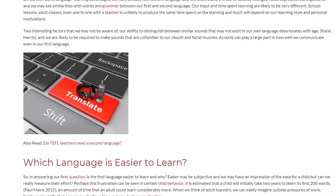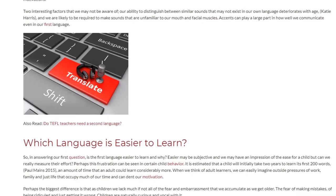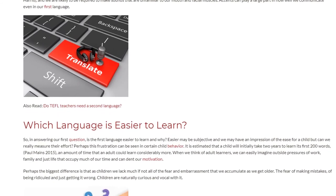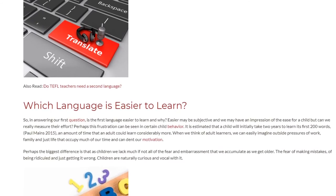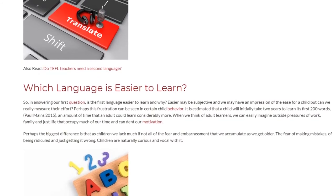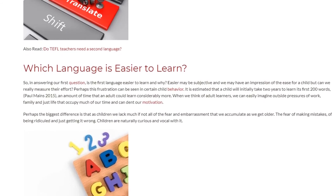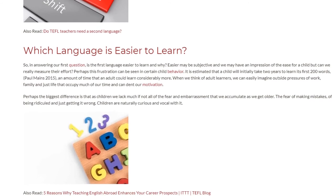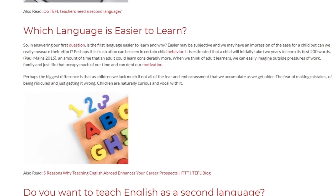Accents can play a large part in how well we communicate, even in our first language. In answering the question of whether the first language is easier to learn and why — ease may be subjective, and while we may have an impression of ease for a child, can we really measure their effort? It is estimated that a child will initially take two years to learn its first 200 words (Paul Maines, 2015), an amount of time in which an adult can learn considerably more. Adults face outside pressures of work, family, and life that occupy much of our time and dampen motivation. Perhaps the biggest difference is that as children we lack much if not all of the fear and embarrassment we accumulate as we get older — the fear of making mistakes, of being ridiculed, and just getting it wrong. Children are naturally curious and vocal with it.